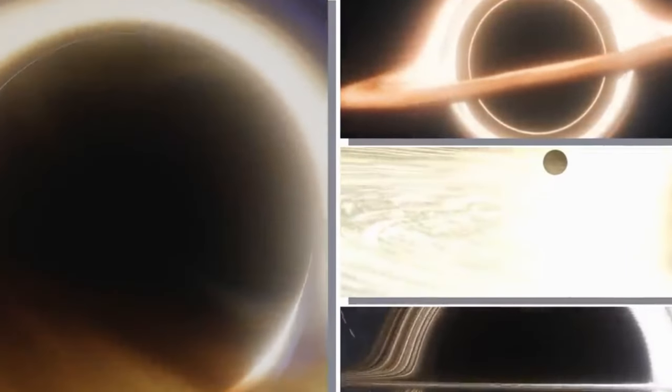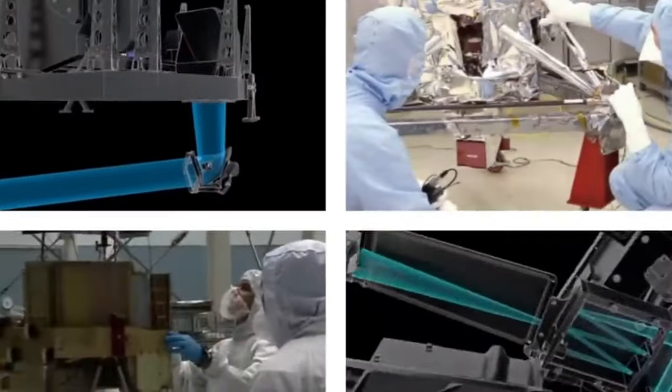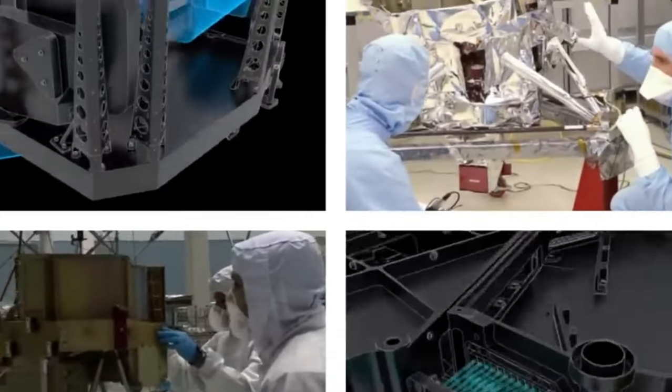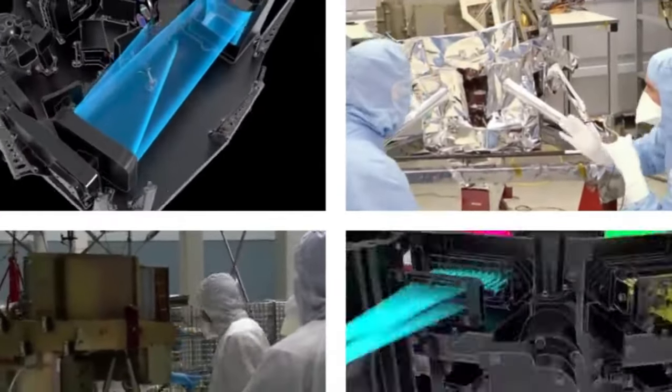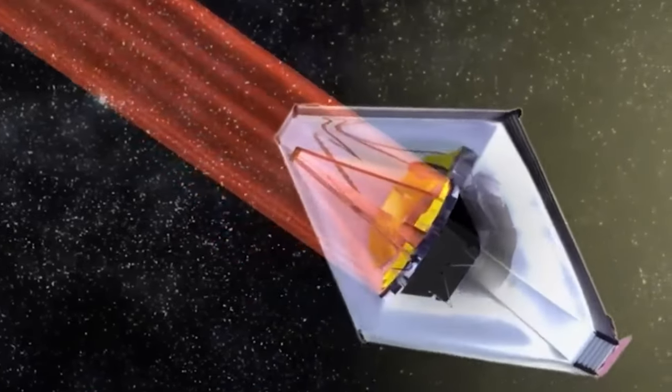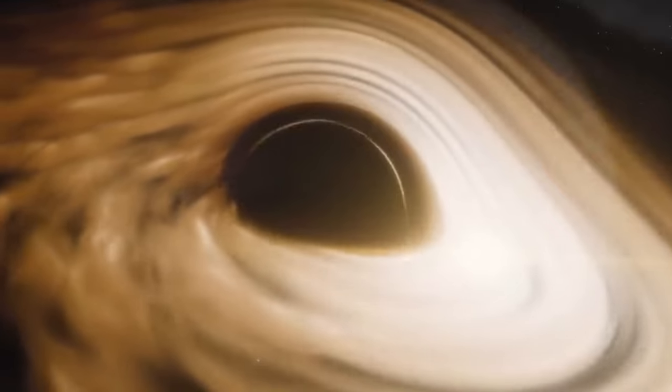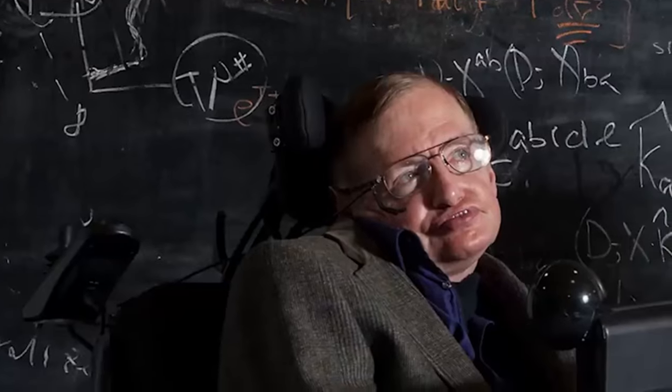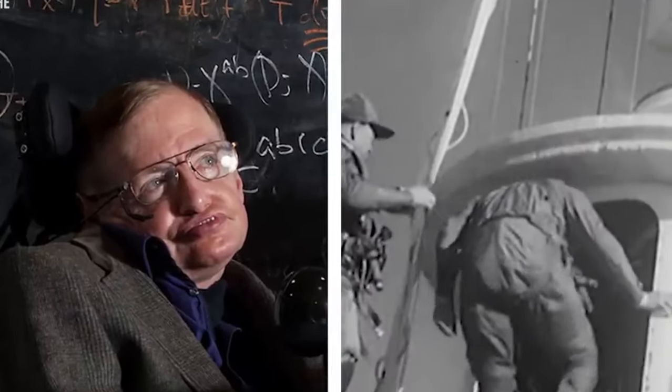This colossal mirror enables JWST to gather and focus light from distant celestial objects with unparalleled precision and sensitivity. The telescope's instrument suite includes a powerful near-infrared camera, a near-infrared spectrograph, a mid-infrared instrument and a fine guidance sensor. These tools work together to capture images, measure spectra and study the properties of objects ranging from the earliest galaxies to planets within our own solar system.